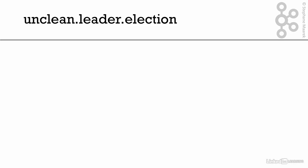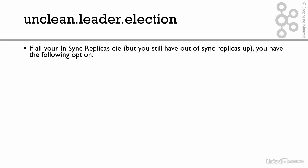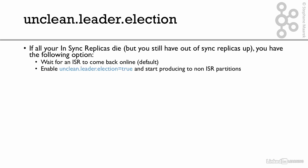The last config we want to see is unclean leader election. If all your ISR — all your in-sync replicas — die and you have out-of-sync replicas up, you have the following options: either you wait for an ISR to come back online (which is the default), during which your topic or partition will be down, or you enable unclean leader election equals true and start producing to a non-ISR partition.